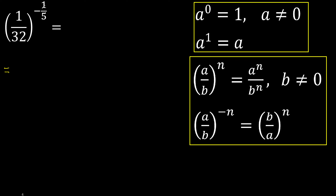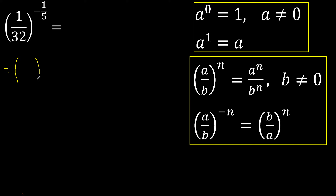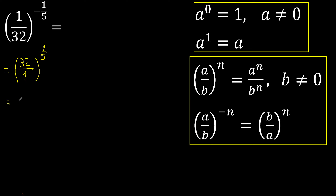Negative, therefore like this. Here, here, exponent like this. 32 divided by 1 is 32; exponent is a fraction, therefore root.